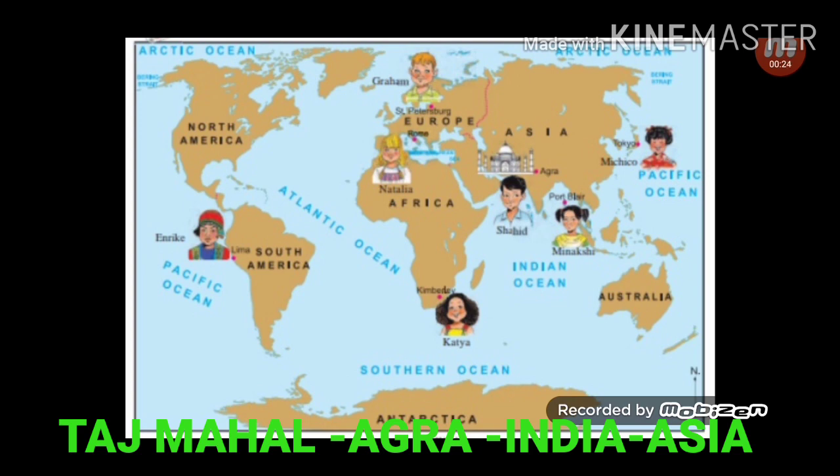We can see over here, there are seven children: Graham, Kataya, Michiko, Natalia, Meenakshi, Sahit, and Enric.